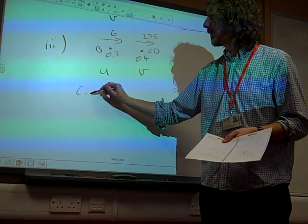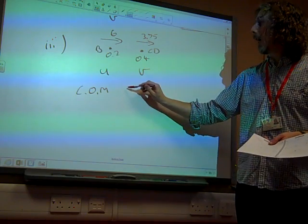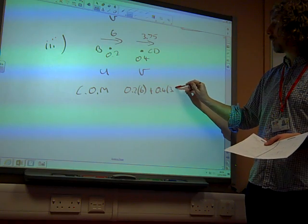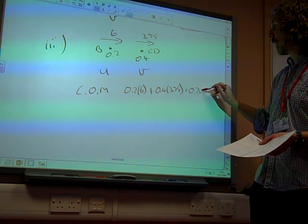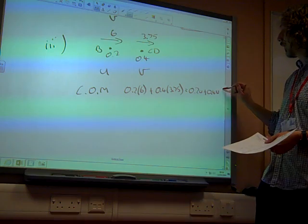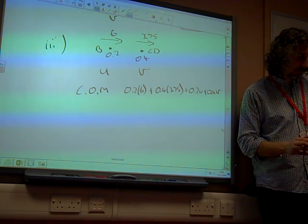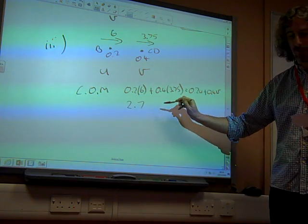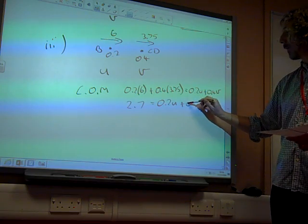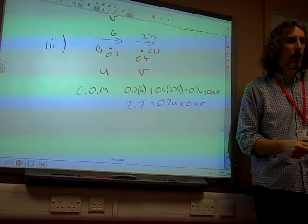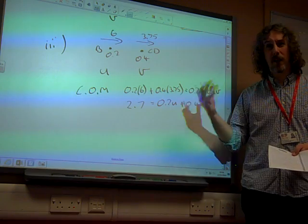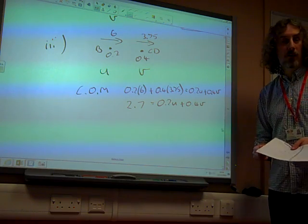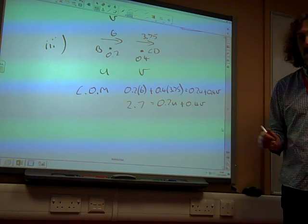Our conservation of momentum calculation has 0.2 times 6 plus 0.4 times 3.75 is 0.2 times U plus 0.4 times V, which gives me 2.7 is 0.2U plus 0.4V. Now this is all very well, but I'm supposed to be finding V. That's the one I'm interested in, and I've still got this figure U involved in this. Do I know anything about the value of U?